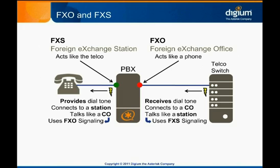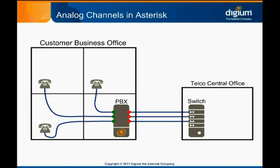Let's take a look at the model again, this time labeling the ports appropriately. We'll follow the path of a call, beginning with someone on the premise taking a phone receiver off-hook. When the phone goes off-hook, the PBX needs to behave like a central office and present dial tone. An FXS module does this, so we can label this port FXS.